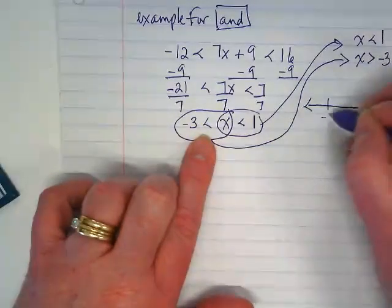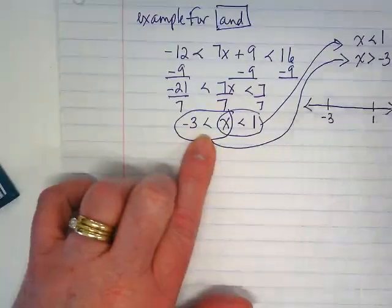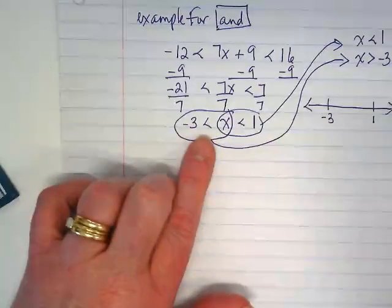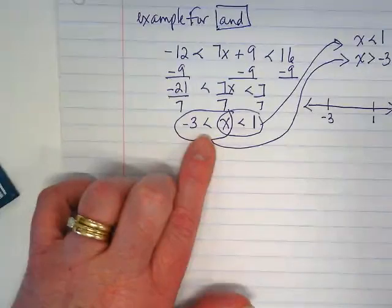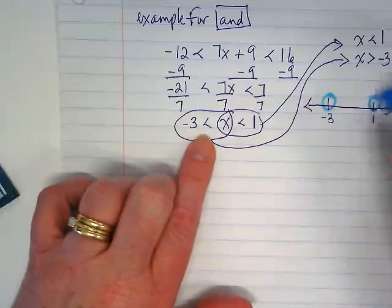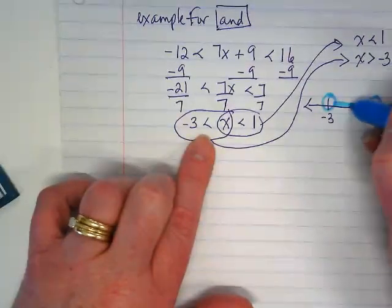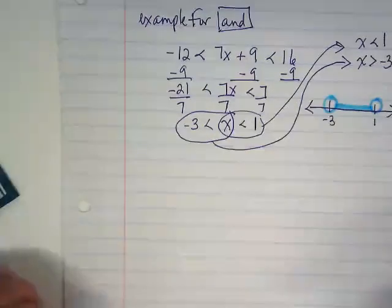Now we're going to put our negative 3 and we're going to put our 1. These are both what kind of circles? Open circles. And what's going to happen? It's greater than negative 3, less than 1, so the line meets in the middle.